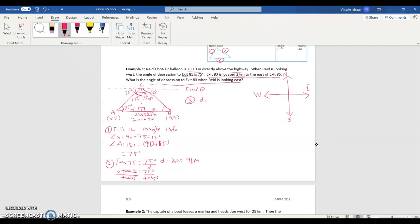Now I'm going to find E. I know that D plus E is equal to 2,000 meters. Therefore, E is going to be equal to 2,000 minus 200.96, which is going to give me 1,799.04 meters. So that's what E is. So now I have two sides of this right-angled triangle.